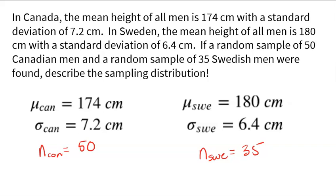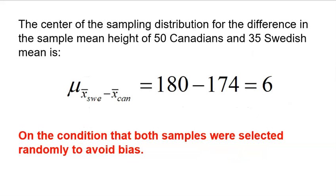What I want to do is build a sampling distribution to show all possible differences between a sample of 50 Canadian men and 35 Swedish men. It all starts with understanding the center. What would the mean of all those possible differences be? If I took a sample of Swedish men and a sample of Canadian men, I could get a whole lot of differences. But the mean of all of them should be the truth.